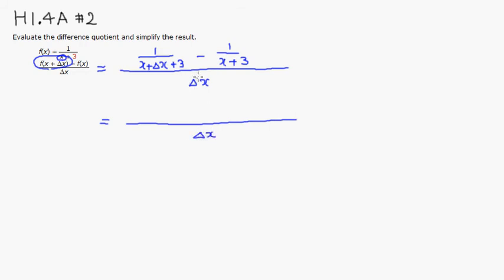Common denominator. Easiest way to get the common denominator is just multiply the denominators together. So we have x plus delta x plus 3 times quantity x plus 3. So that will give us the common denominator. But we have to adjust it. Then you adjust the numerator.